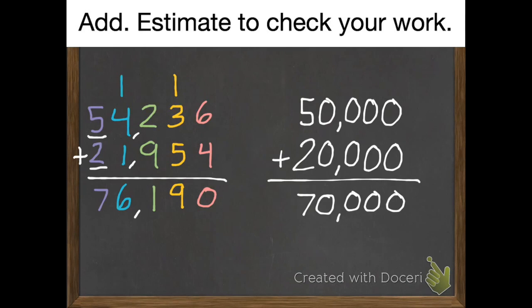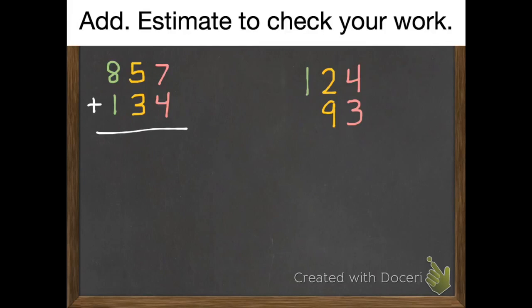Now that I've done two examples, time for you to try some. Same instructions. You're going to add each of these two numbers. And then you're going to estimate to check your work. Pause it. Then unpause it when you're done.